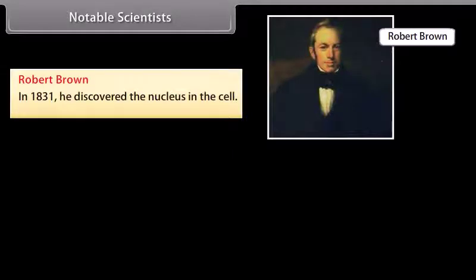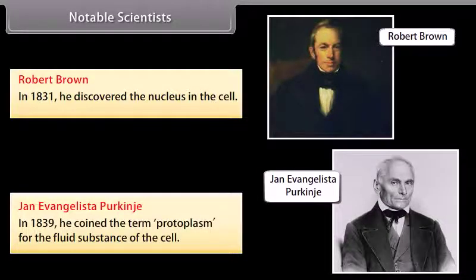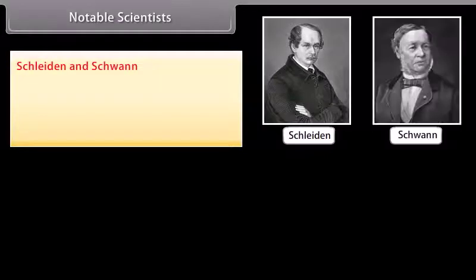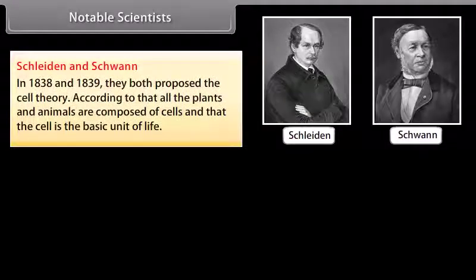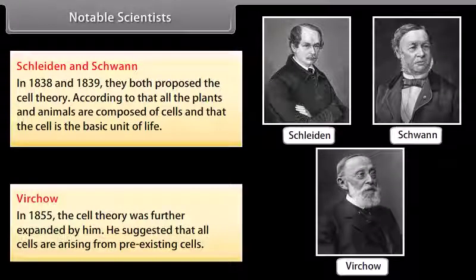Notable scientists: Robert Brown in 1831 discovered the nucleus in the cell. Jan Evangelista Purkinje in 1839 coined the term 'protoplasm' for the fluid substance of the cell. Schleiden and Schwann in 1838 and 1839 proposed the cell theory, according to which all plants and animals are composed of cells and the cell is the basic unit of life. Virchow in 1855 further expanded the cell theory, suggesting that all cells arise from pre-existing cells.